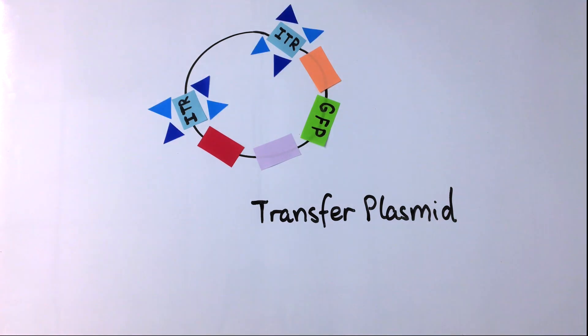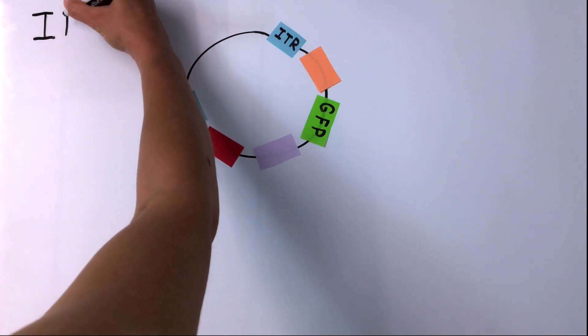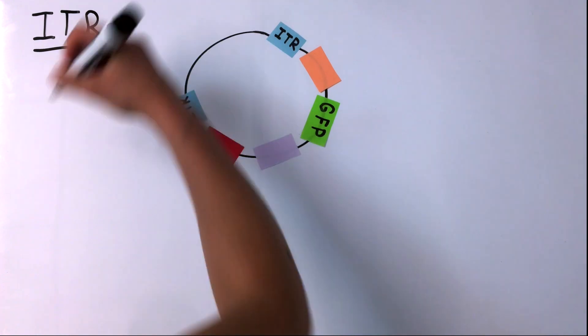By the ITRs, or inverted terminal repeats. AAV plasmids can be identified from other non-AAV plasmids because they have two ITRs.